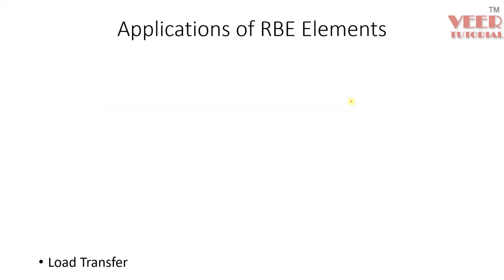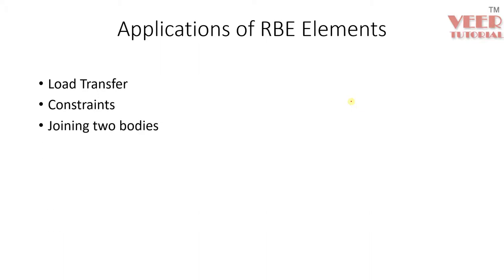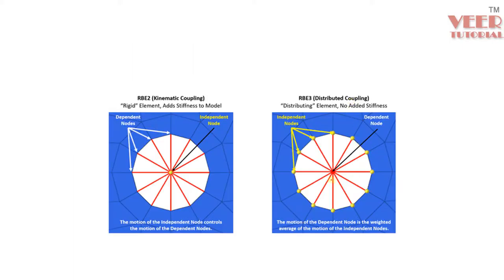The general applications of coupling elements are: they are used to transfer load, to apply constraints, for fixing or applying boundary conditions, to join two bodies, and for bolt connections. In an assembly, we generally do not create meshing of the bolt; instead we connect elements using a rigid element or RB element. For a bolt hole, we pick up two layers of elements — the first layer and the second, called the washer — and connect them using RB2 (Kinematic Coupling) or RB3 (Distributed Coupling).